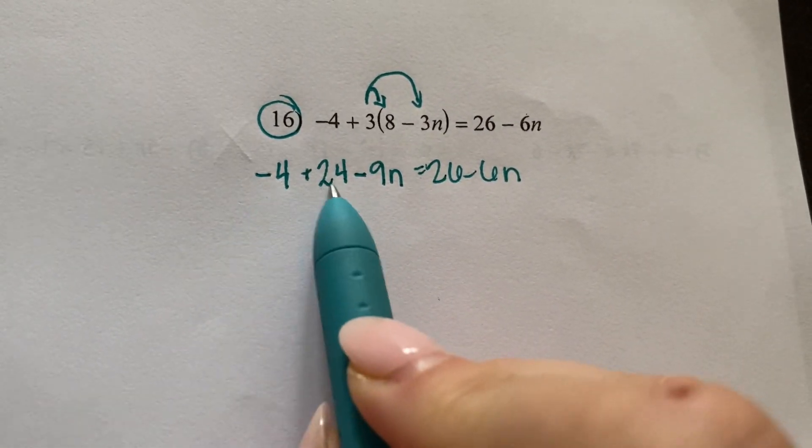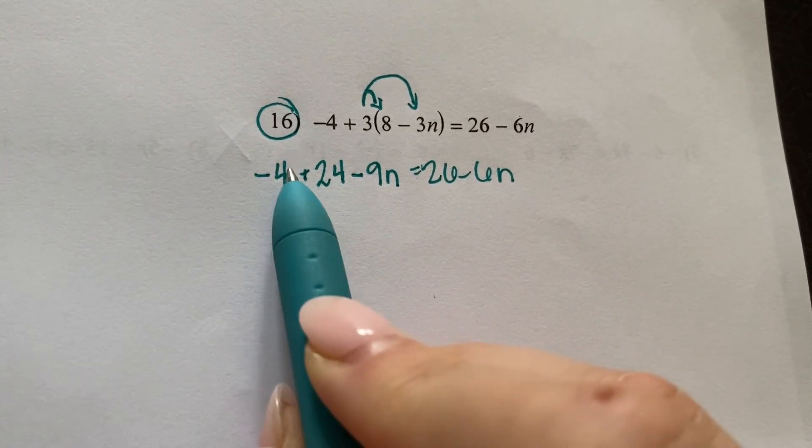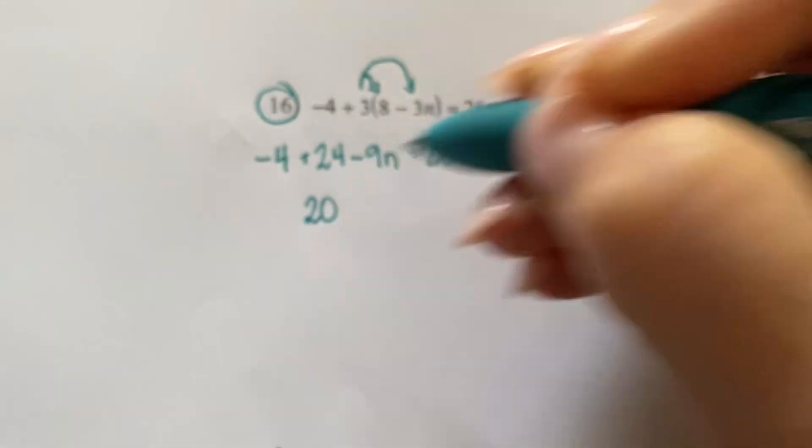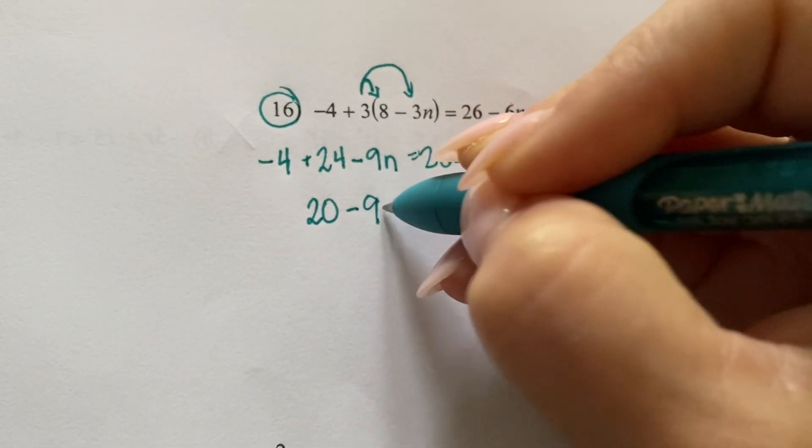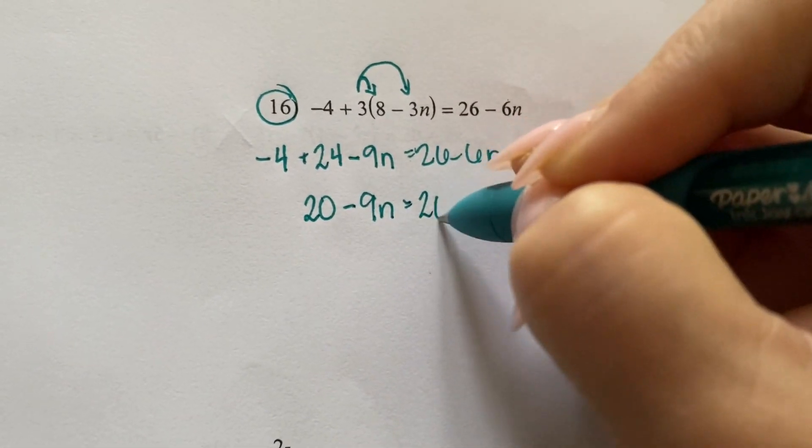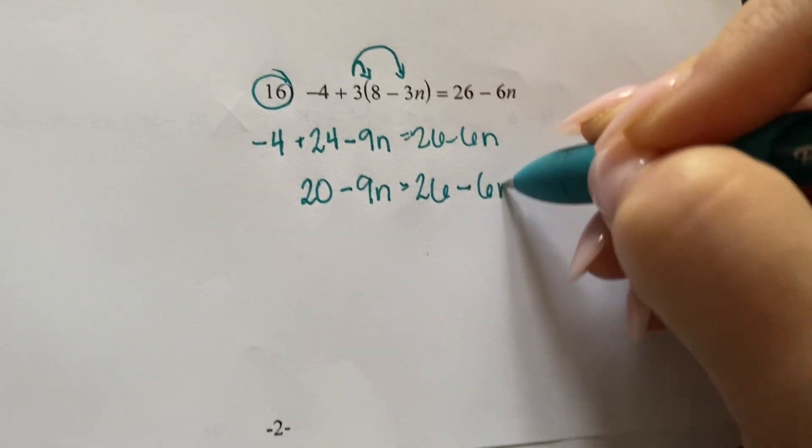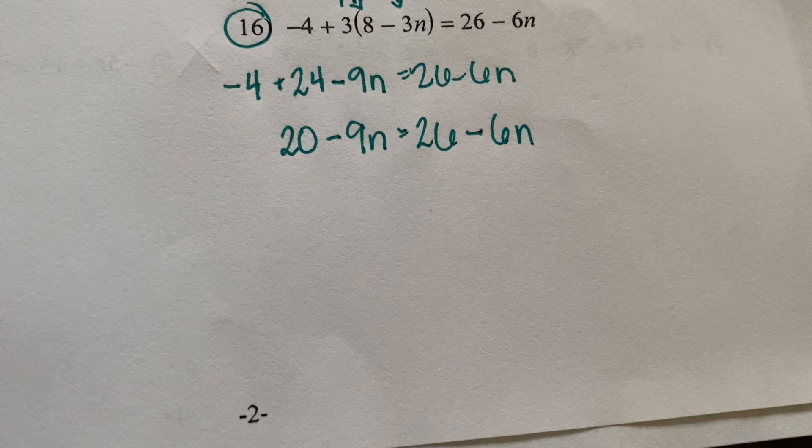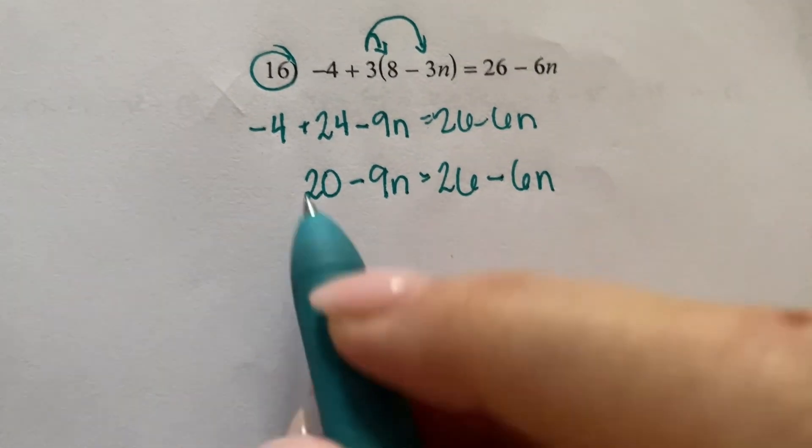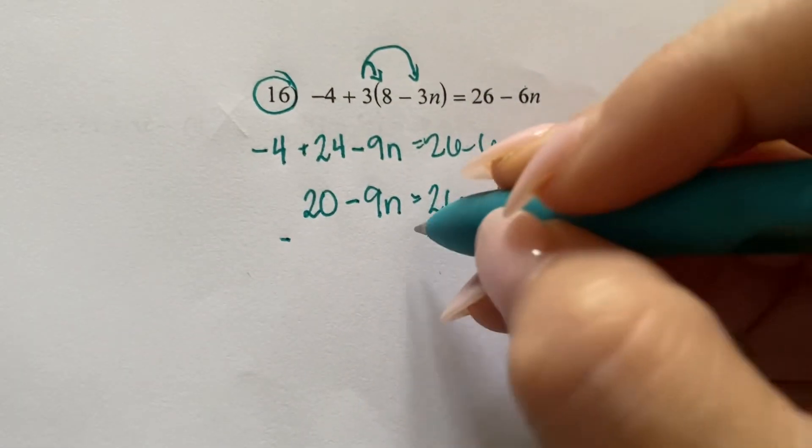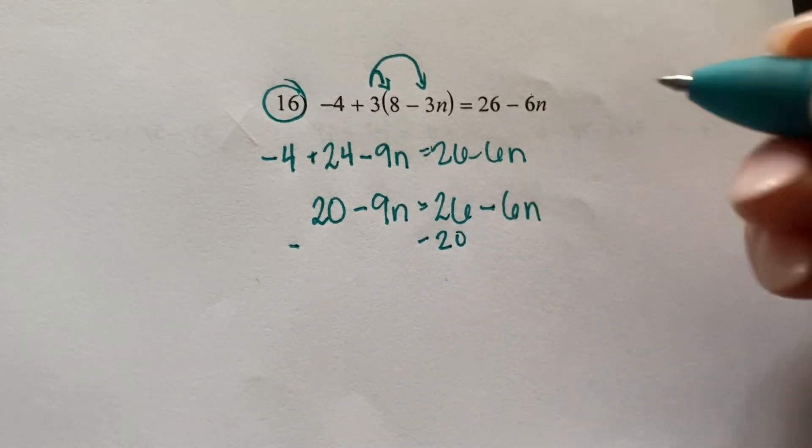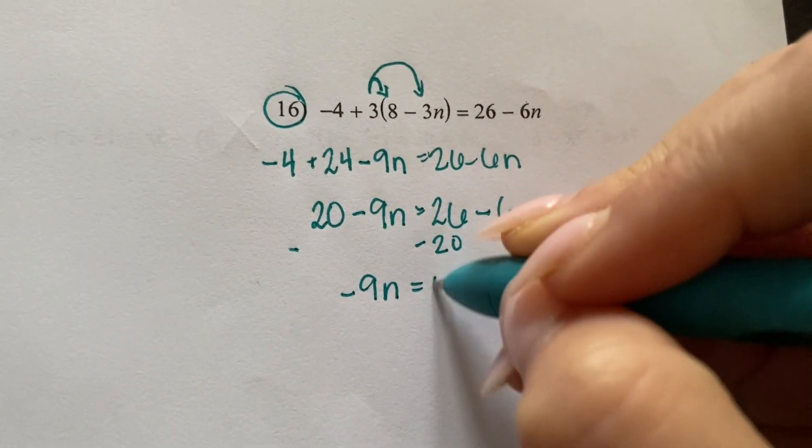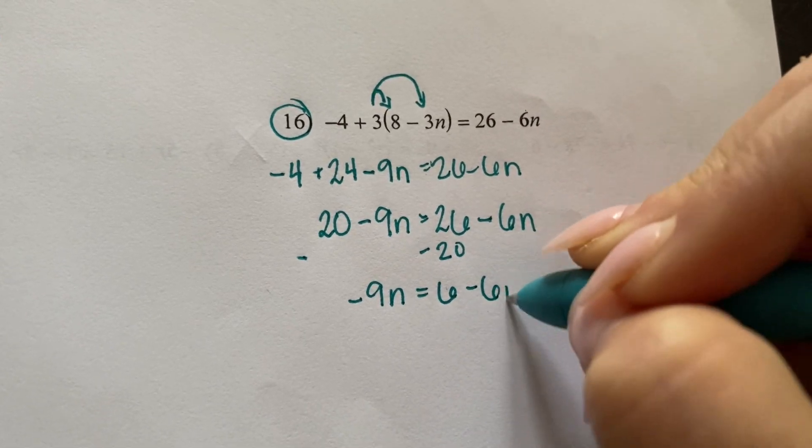These two can combine. I have a negative 4 and a positive 24, leaving me with 20 minus 9N equals 26 minus 6N. Okay? I am going to subtract 20 from both sides. Negative 9N equals 6 minus 6N.